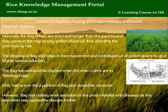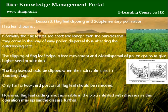Lesson 3: Flag Leaf Clipping and Supplementary Pollination. Flag leaf clipping: Normally, flag leaves are erect and longer than panicles and come in the way of easy pollen dispersal, thus affecting the outcrossing rate. Clipping the flag leaf helps in free movement and wide dispersal of pollen grains to give higher seed production. The flag leaf should be clipped when the main culms are in booting stage, and only half or two-thirds of the flag leaf should be removed. However, flag leaf cutting is not advisable in plots infested with diseases, as this operation may spread the disease further.